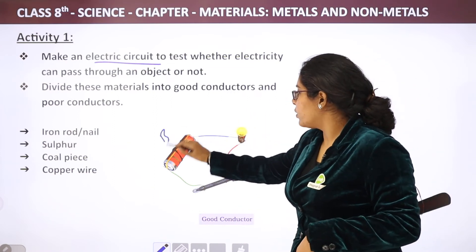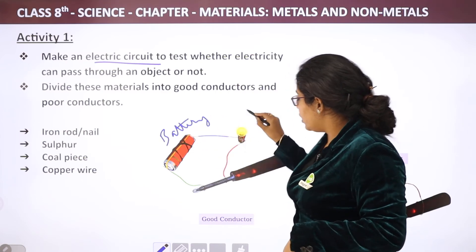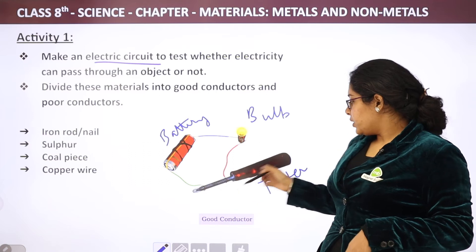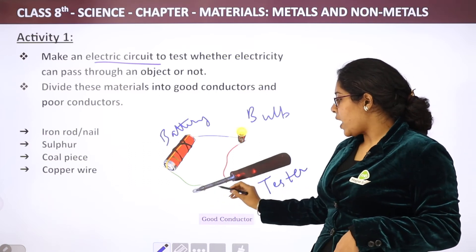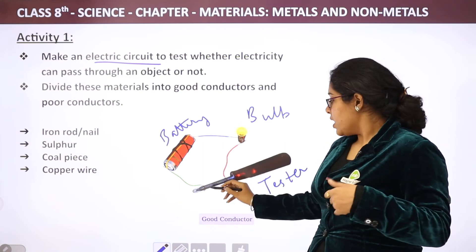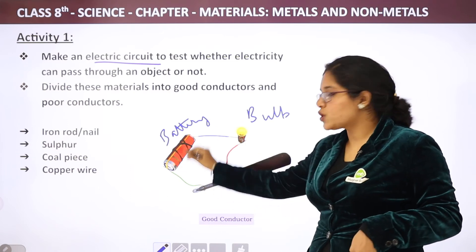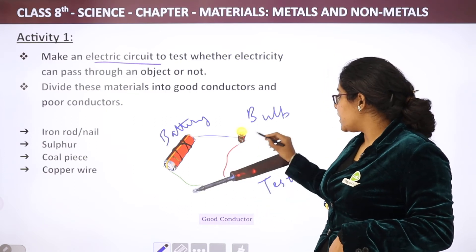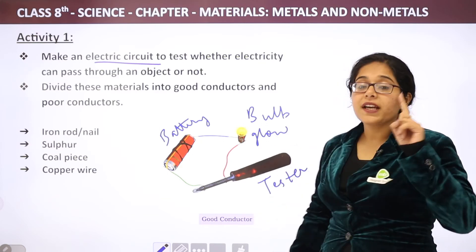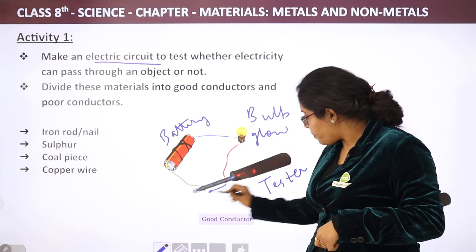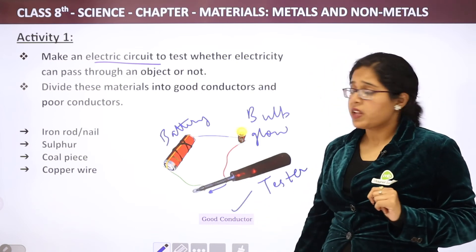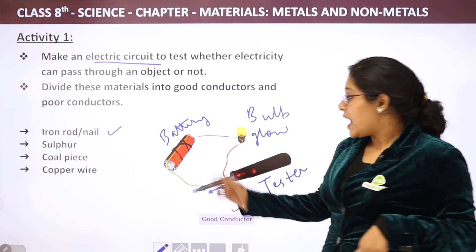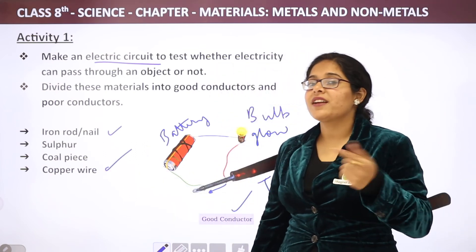In the electric circuit, we have a battery, a bulb, and a tester. This is an iron object. When the circuit is complete — all wires connected and the battery is on — the bulb will glow. The bulb glowing means that electricity has passed through the iron. So iron is a good conductor of electricity. Whether you use an iron rod or nail, it will be a good conductor because iron is a metal. Copper is also a metal, and now you understand why wires are made of copper.